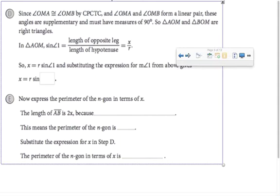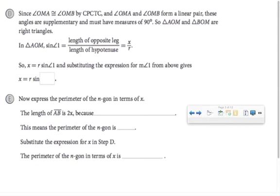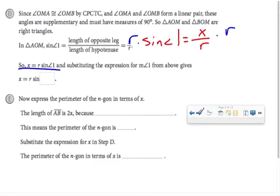Since I can conclude that triangle AOM is a right triangle, the sine of angle 1, remember sine is opposite over hypotenuse, the sine of angle 1 would be X, which is opposite angle 1, over R, which is the hypotenuse. So, sine of angle 1 equals X over R. And if I multiply both sides by R, I get this expression. And if I substitute in this for angle 1, now I have that X equals R times the sine of 180 over N.